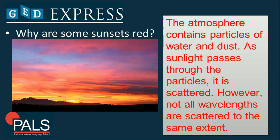Why are some sunsets red? Have you ever asked this to yourself? The explanation for that would be this: the atmosphere contains particles of water and dust, and as sunlight passes through the particles, it is scattered. Not all wavelengths are scattered to the same extent, and that results in that kind of color for a sunset.